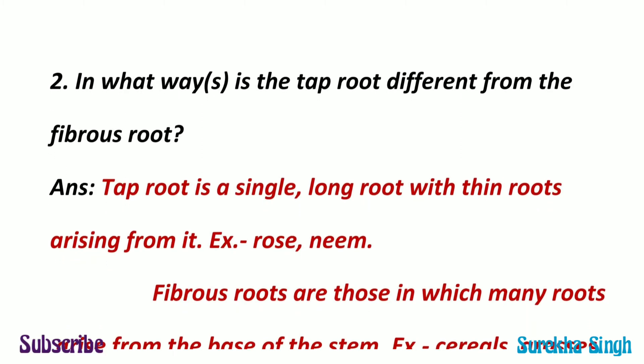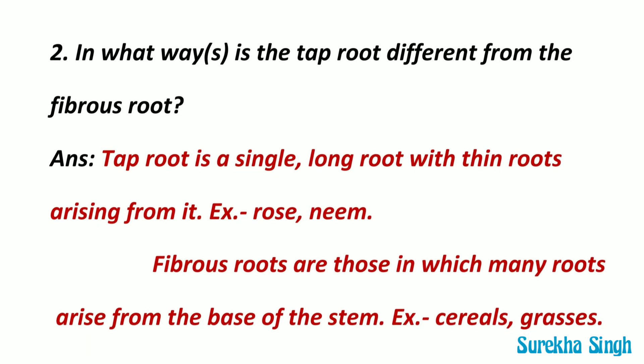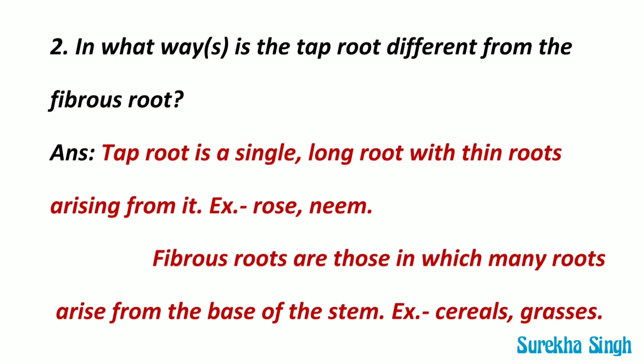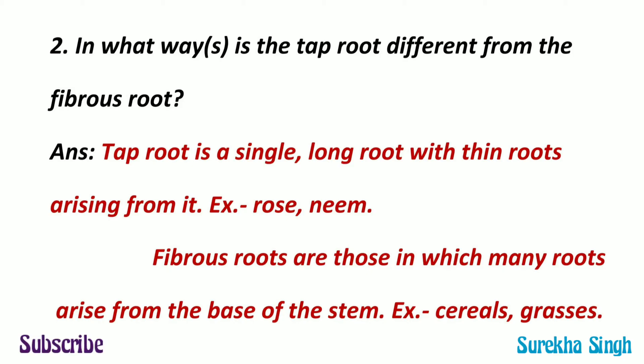Tap root is a single long root with thin roots arising from it. Tap roots are found in beans, rose, neem, peepal, etc. Fibrous roots are those in which many roots arise from the base of the stem. Fibrous roots are found in all cereals, grasses and banana.